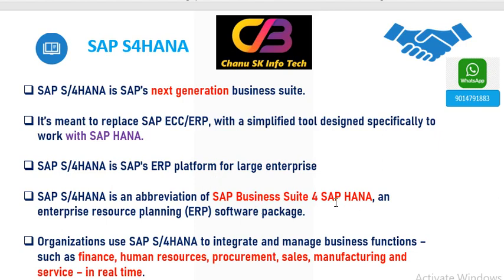SAP S4 HANA is ERP software, also called ERP software. ERP stands for Enterprise Resource Planning. Enterprise means any organization or business, and resource means time, money, machine, people, etc.